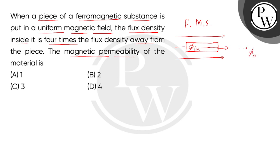So this flux density outside, which we call phi-out — the flux inside is 4 times the flux outside. That means phi-in is equal to 4 times phi-out.